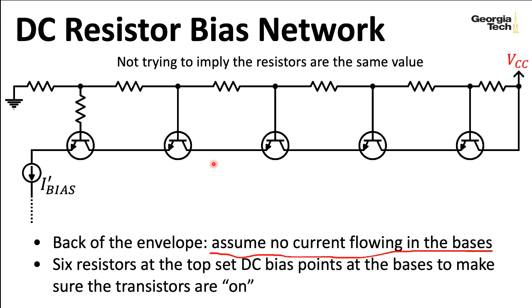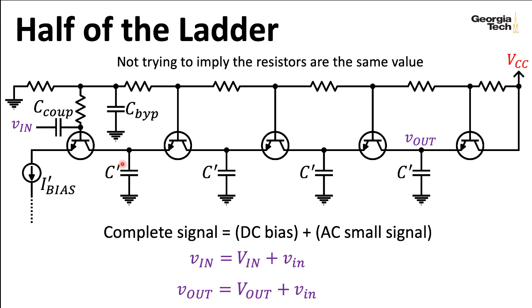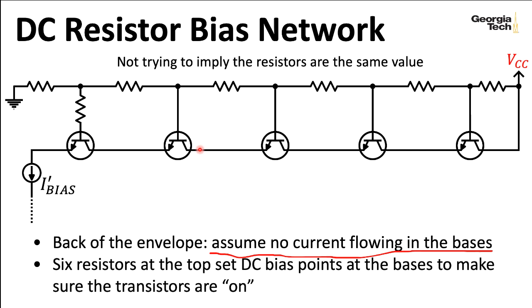The reason I'm putting the primes here is that I'm analyzing half of the ladder. When I fold this over to create the full ladder, I want to combine those and get rid of the primes. So this I prime bias here, this is what changes the overall behavior of these particular transistors.